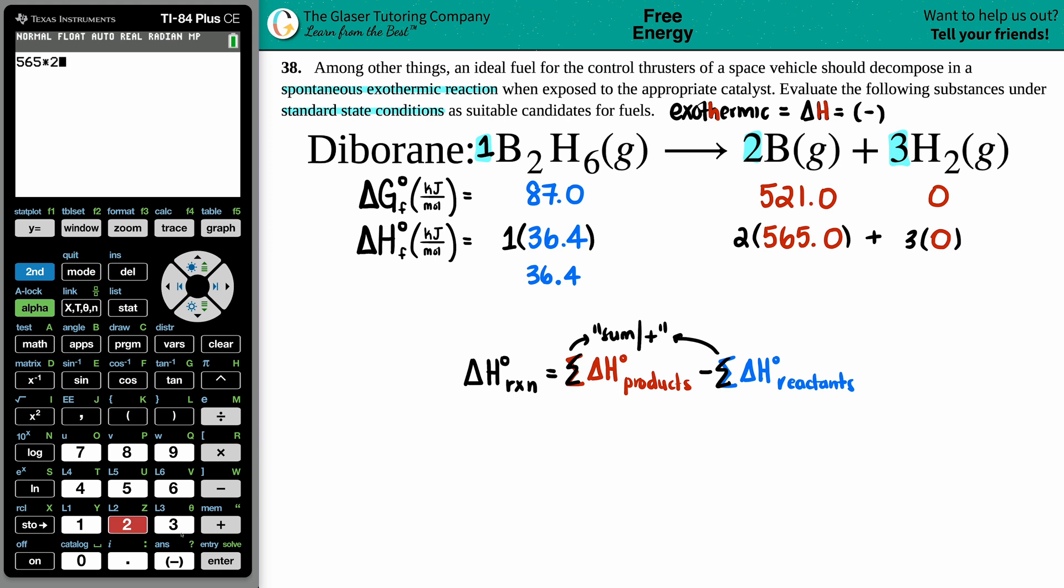And this side if I just throw it into calc I get 565 times two or two times 565, I get 1130 plus zero is the same number. So 1130. Now we have the parts, let's just plug it into the formula. Let's find out is it exothermic?